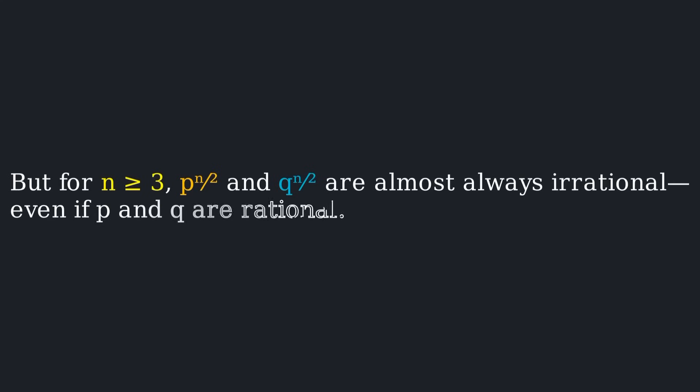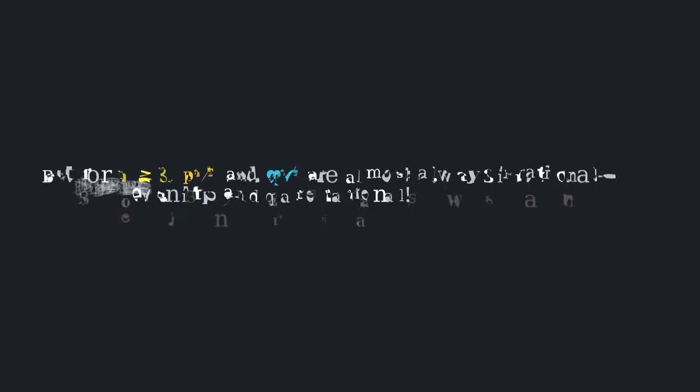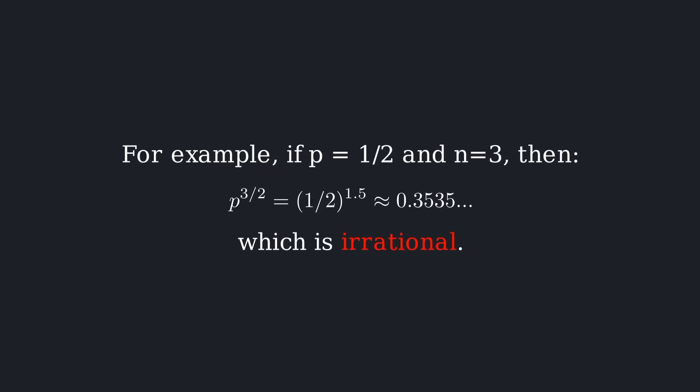But for n greater than or equal to 3, p to the n over 2 and q to the n over 2 are almost always irrational, even if p and q are rational. For example, if p equals 1 half and n equals 3, then p to the 3 over 2 is approximately 0.3535, which is irrational.